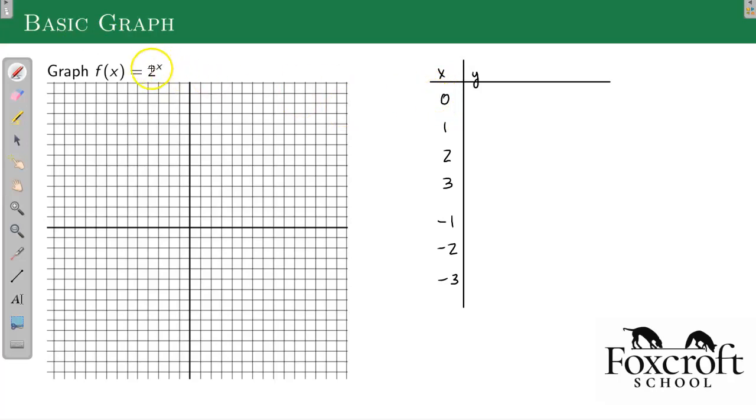So what happens if I put in 0? I'm just putting it in for x, so that gives me 2 to the 0 is 1. So I put in 0, I get out 1. So 0, 1 right there is on my graph. Next I put in 1, I get 2 to the first, that's just 2. So the point 1, 2 is on my graph.